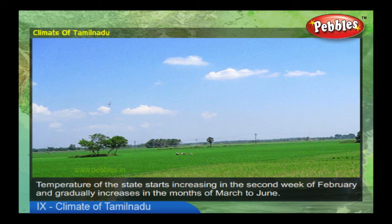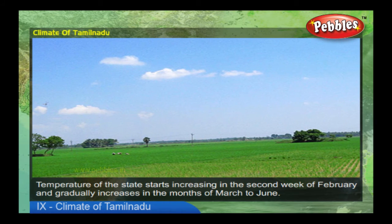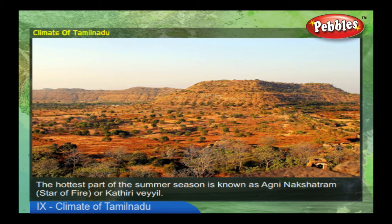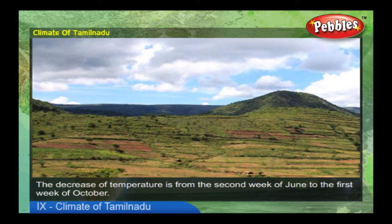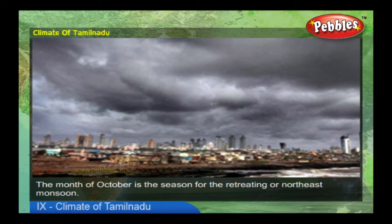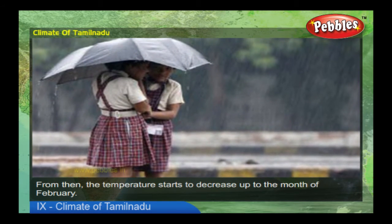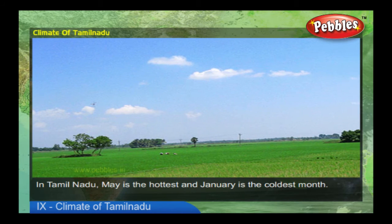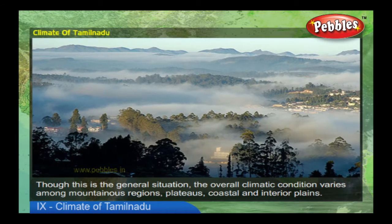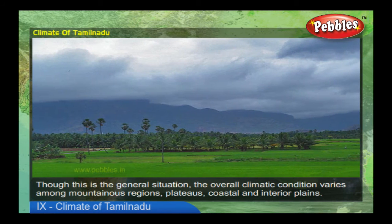Temperature of the state starts increasing in the second week of February and gradually increases through March to June. The hottest part of the summer season is known as Agni Nakshatram — 'star of fire' or Kathiri Veil. The decrease of temperature is from the second week of June to the first week of October. The month of October marks the retreating or northeast monsoon, from which temperature decreases up to February. May is the hottest and January is the coldest month, though the overall climatic condition varies among mountainous regions, plateaus, and coastal and interior plains.